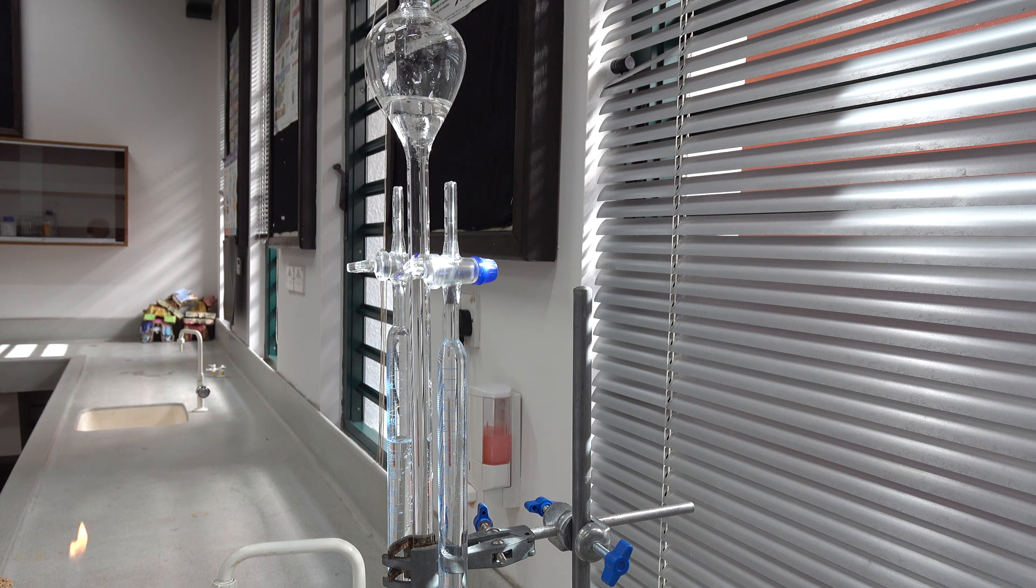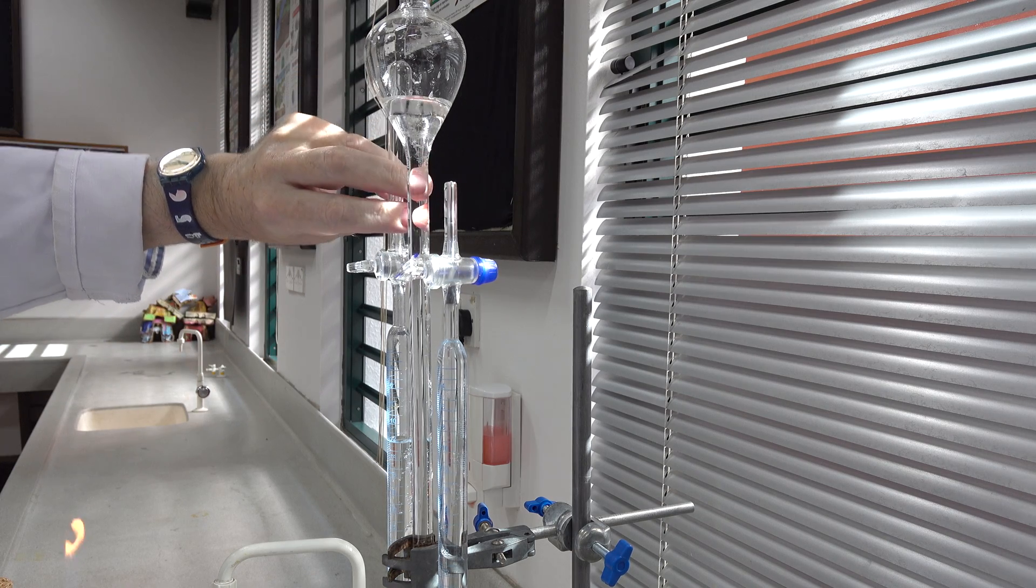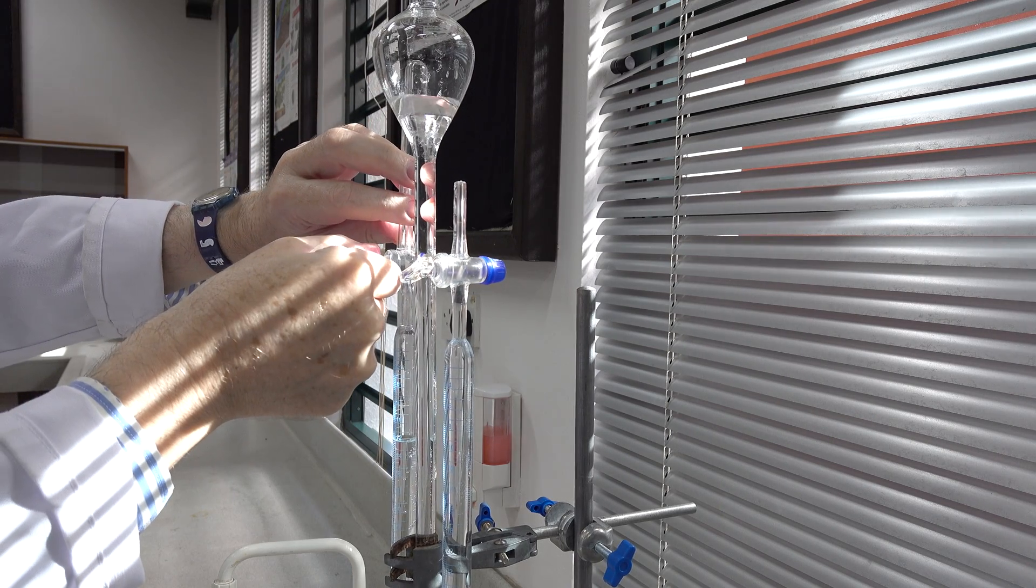Now we move on to the gas above the anode. That's in the burette tube furthest from the camera. Again, we need to slowly fill the tube with gas.